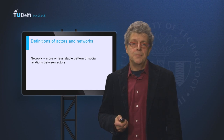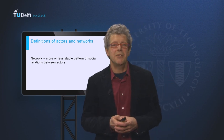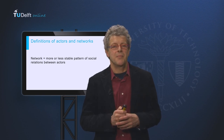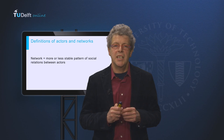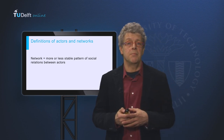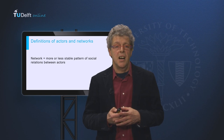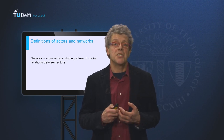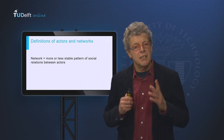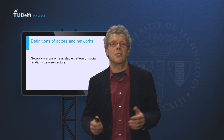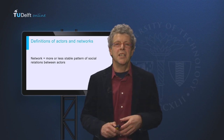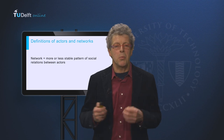By now we have used some terms that need better definition. Actors are defined as social entities that have an interest in a system and/or have some ability to influence the system. Actors are often groups and organisations, but also important individuals can be considered as actors. Networks are more or less stable patterns of social relations between actors. In this course, we will focus on networks that take shape around policy problems or programmes.